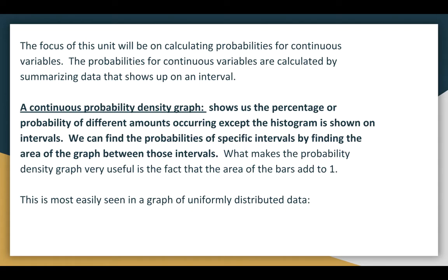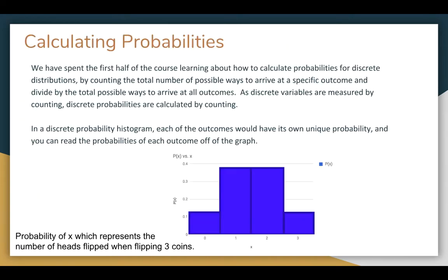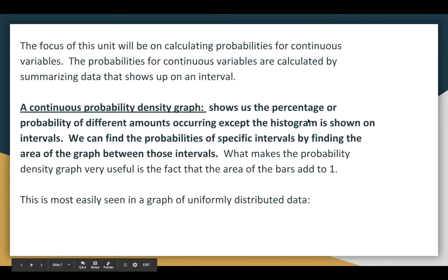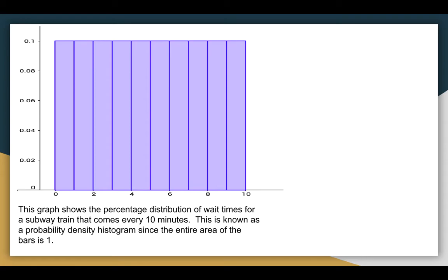But the focus of this unit is going to be on continuous data. And we're actually going to be calculating data on an interval. And so a continuous probability density graph, that's going to be the goal of this unit is to get one of these. And it really looks like a histogram, but it's a lot nicer than that. It shows us a percentage or probability of different amounts of occurring, except the histogram is shown in intervals. We can find the probability by finding the area of the graph. That's all we have to do. And so if we have bars, we're just doing areas of rectangles.